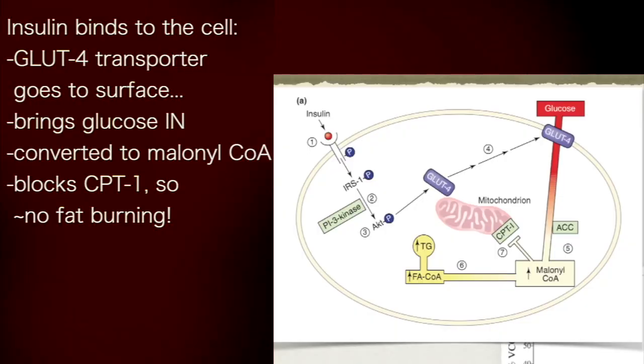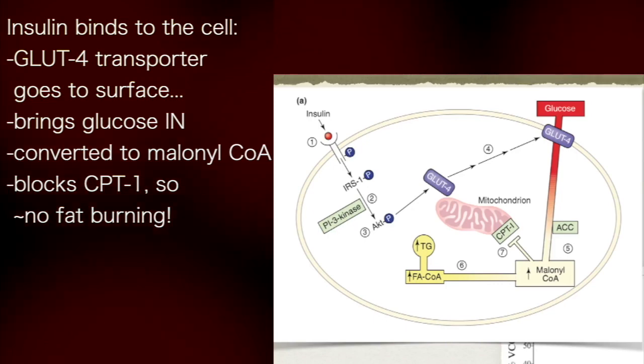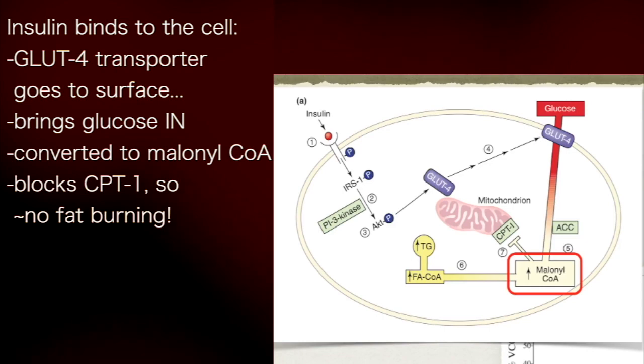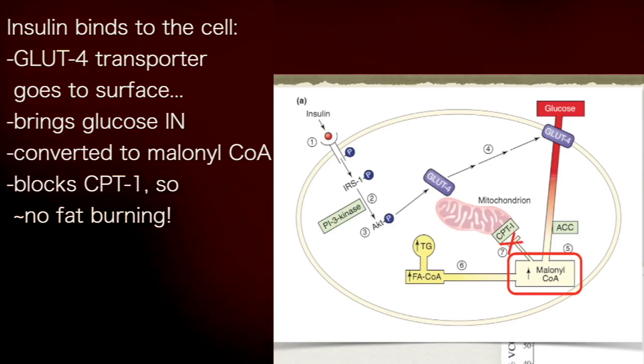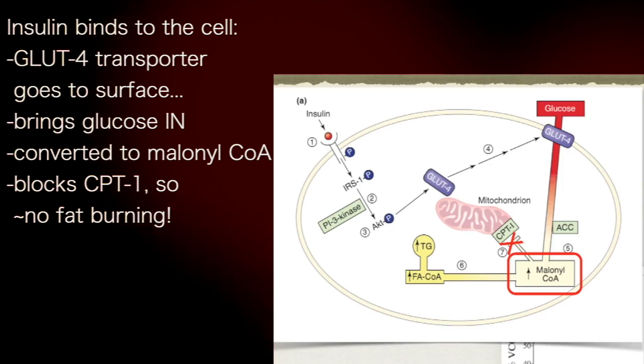Here's a cuter picture of it. Insulin binds to the cell up in the upper left-hand corner. The GLUT4 transporter goes to the surface. Glucose comes in. It's converted to malonyl-CoA because you're going to turn it into fat. So that blocks CPT-1 so you don't burn any fat. And then all your fat accumulates there in yellow.